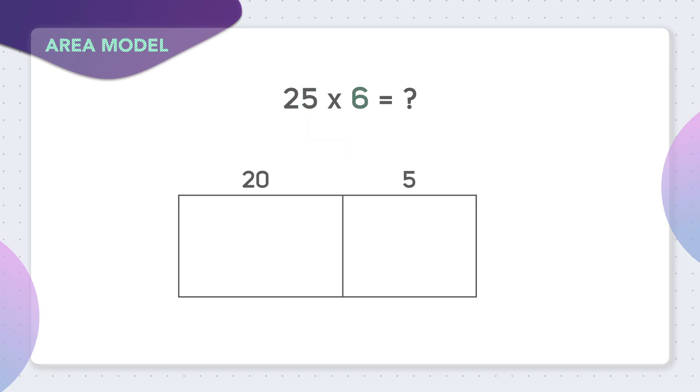Now we're multiplying all of this by 6, so we will put the 6 on the side of the area model. Now we can begin multiplying. We will start with this first box on the left, where we will be multiplying 20 times 6. To multiply 20 times 6, we can just ignore the zero and multiply 2 times 6.